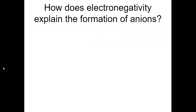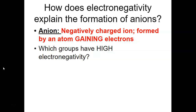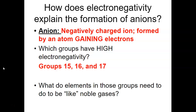Since electronegativity is related to gaining electrons, it explains the formation of anions. Anions are negatively charged ions formed when an atom gains electrons — since electrons have a negative charge, the atom becomes negatively charged. Groups 15, 16, and 17 have high electronegativity, and these elements gain electrons to become like noble gases.